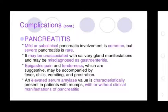Epigastric pain and tenderness, which are suggestive of pancreatitis, may be accompanied by fever, chills, vomiting, and prostration. Elevated serum amylase values are characteristically present in patients with mumps even without clinical manifestations of pancreatitis.